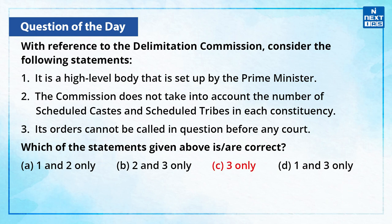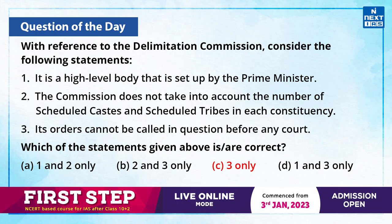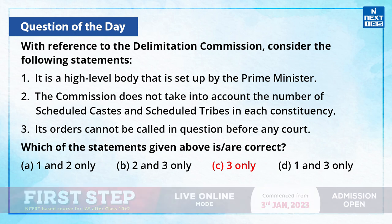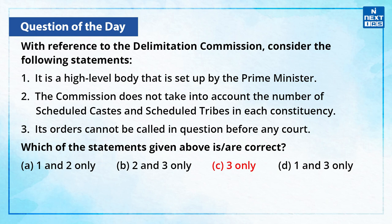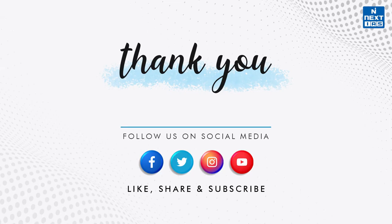The correct answer is C, that is, only statement 3 is correct. Statement 1 and 2 are incorrect. Statement 1 is incorrect as the delimitation commission is a high-level body that is set up by the President of India and not the Prime Minister. Statement 2 is incorrect as the commission takes into account factors such as geography, topography and the boundaries of administrative units such as districts and tehseels, and also the number of scheduled castes and scheduled tribes in each constituency and ensures that their interests are protected. I hope you liked the video. You may also check out our daily current affairs section on our website, and for more such videos, stay tuned to Next IAS YouTube channel.